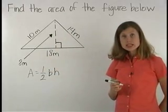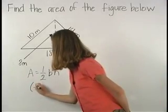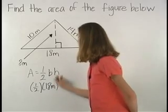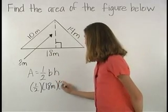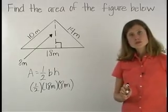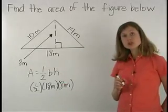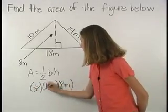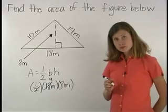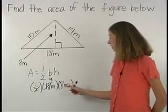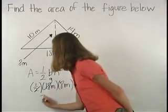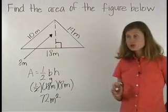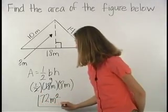Now, plugging into the formula, we have one half times 18 meters times 8 meters. It doesn't matter which order we multiply, so we can begin by multiplying one half times 18 to get 9 meters. Now, 9 meters times 8 meters is 72 meters squared. So the area of the triangle shown here is 72 meters squared.